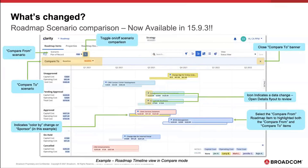Key capabilities include the ability to compare one scenario to another. Visual indicators representing data changes, swim lane changes, color by changes, date shifts, and the ability to drill into those change details.